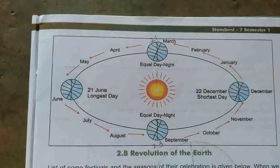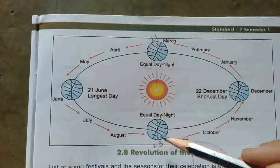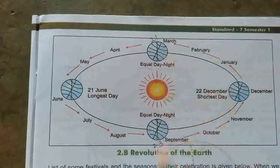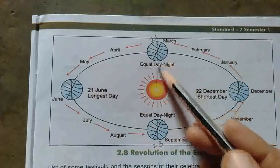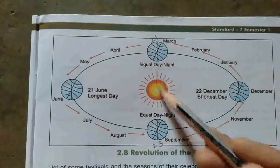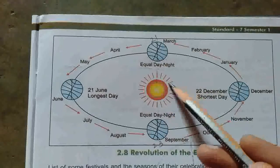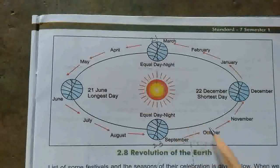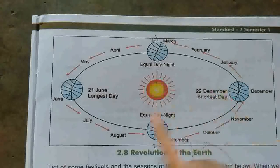Here we are understanding about the revolution of the earth and how the seasons occur. Where the sun's rays fall vertically — either in the north or southern hemisphere — as the earth moves around the sun, all the months are shown. Where the sun rays fall vertically, that is summer season, because they are vertical. And where they are slanting, we feel winter season.